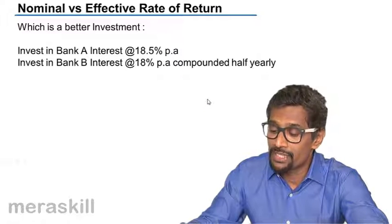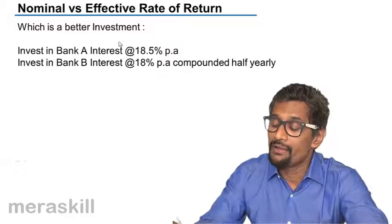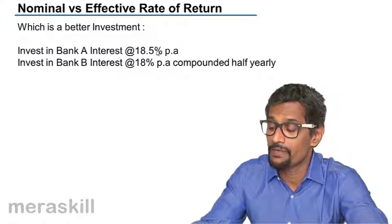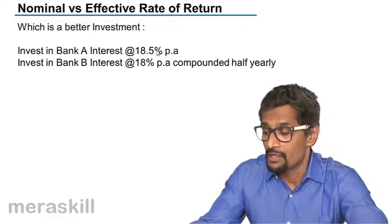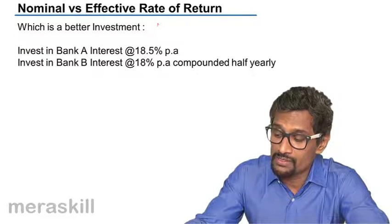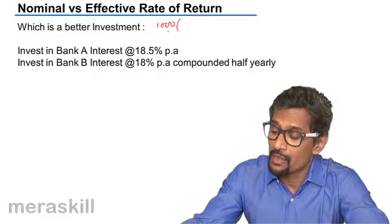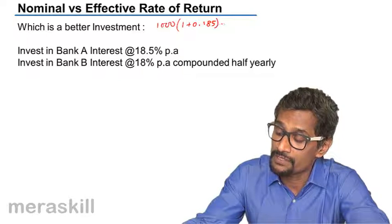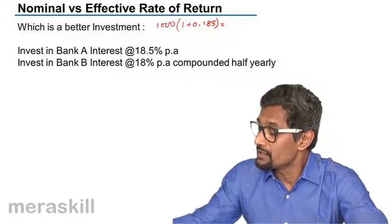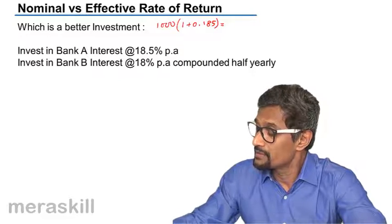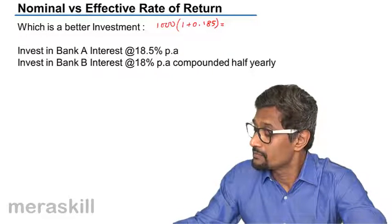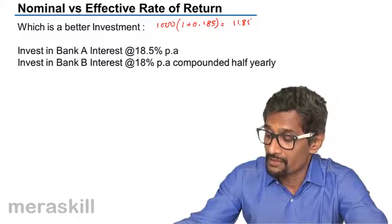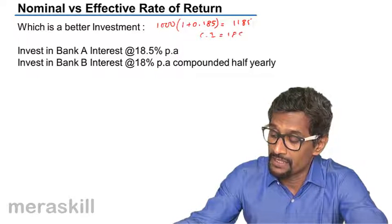So we do have standard formula to find. For example, you have a case which is a better investment, interest at 18.5% per annum. So 18.5% per annum, suppose amount is say 1,000 rupees. And it is 18.5% means 1 plus 0.185. For the first year, so it's going to be 1,185.